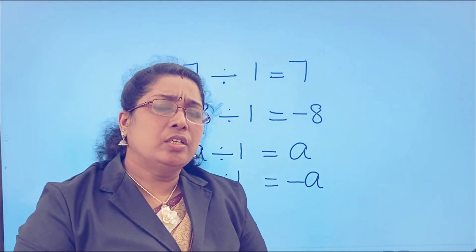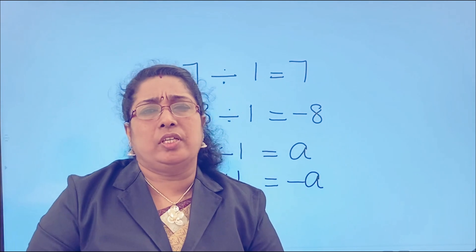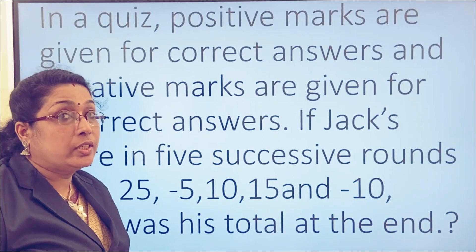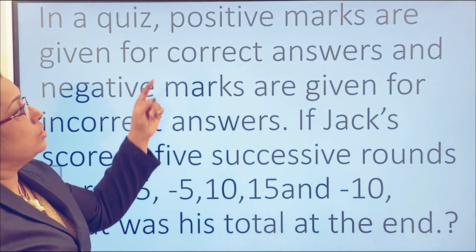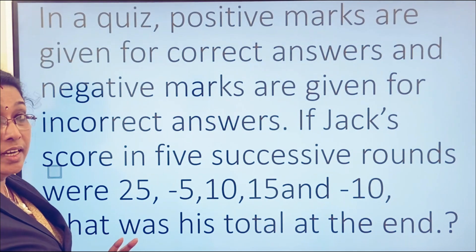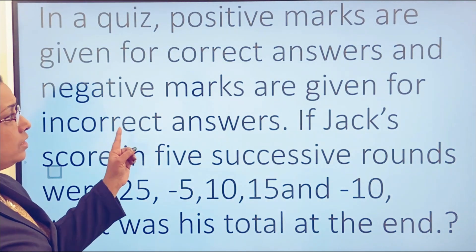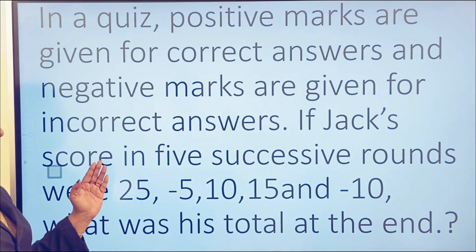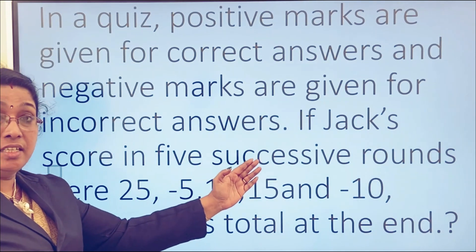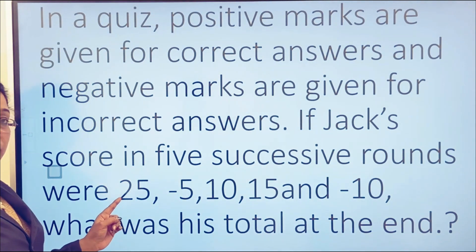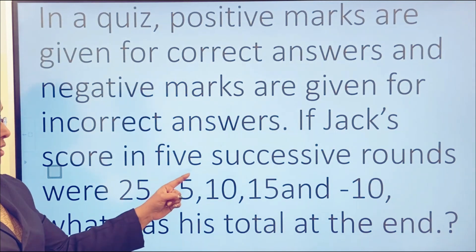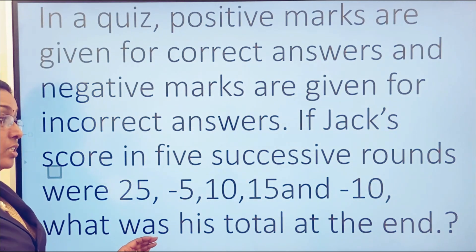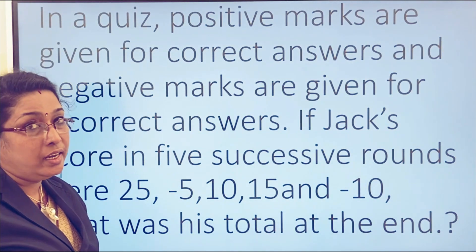So, dear students, we have discussed all the properties of integers. Now let us move to some questions. Here is a question: positive marks are given for correct answers and negative marks for incorrect answers. If the score in 5 successive rounds were 25, negative 5, 10, 15, and negative 10, what was the total at the end?